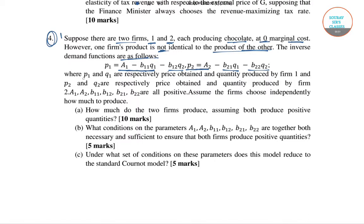P1 and Q1 are respectively the price obtained and quantity produced by firm 1, and P2 and Q2 are respectively the price obtained and quantity produced by firm 2. The parameters A1, A2, B11, B12, B21, and B22 are all positive. Firms choose independently how much to produce.